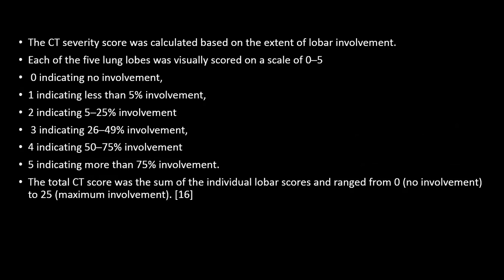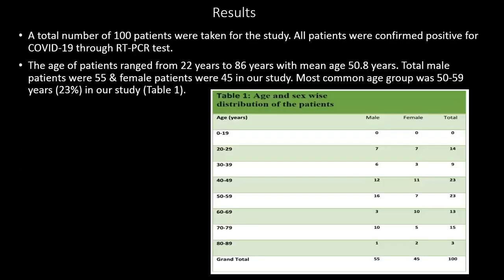The CT severity score is calculated based on the extent of lobar involvement. Each of the five lobes was visually scored on a scale of 0 to 5: 0 = no involvement, 1 = less than 5%, 2 = 5–25%, 3 = 26–49%, 4 = 50–75%, and 5 = more than 75% involvement. The total score ranges from 0 to 25, where 0 indicates no involvement and 25 indicates maximum involvement.